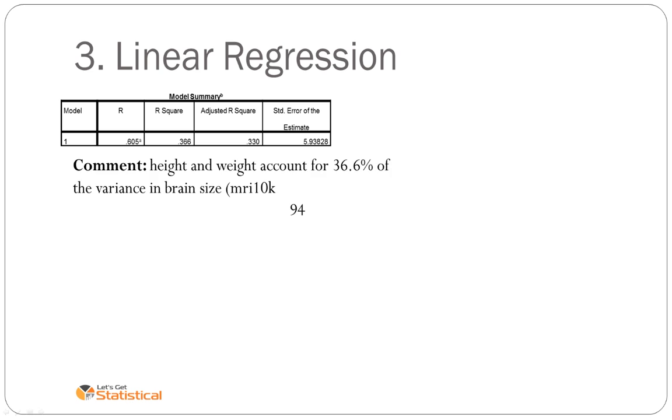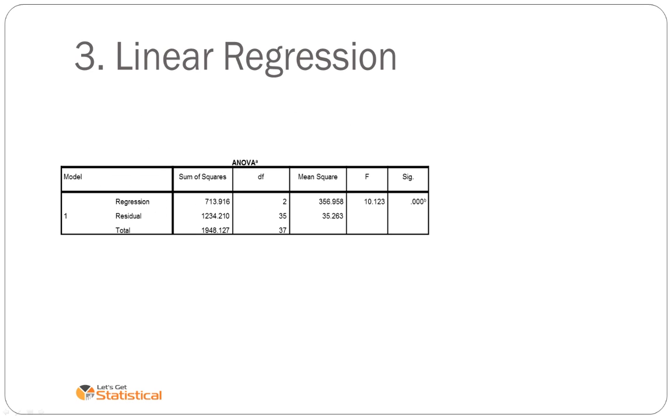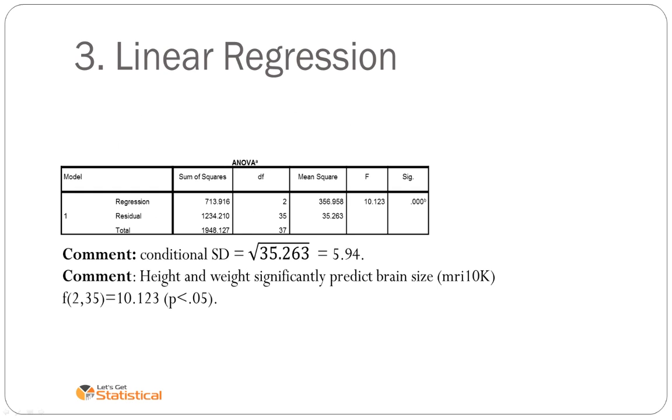We can go onto the ANOVA table and comment on the conditional standard deviation, which we just previously saw on that table being 5.94. We can also find it from root mean squared error of 35.263. We can also make the conclusion that the model is significant, i.e. height and weight significantly predict brain size. We don't know which one. We don't know which one how. We can report on the F statistic and its significance level.